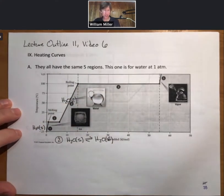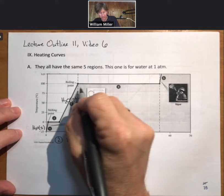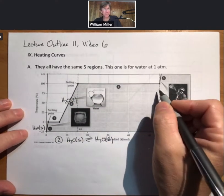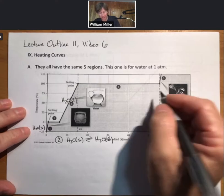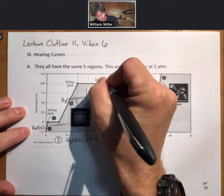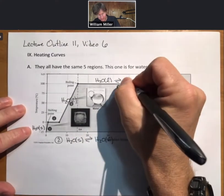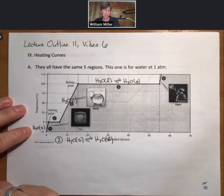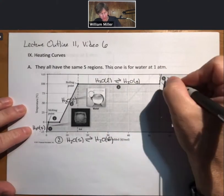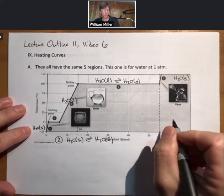Then three here, that's all H2O liquid. Region four takes a lot of energy to overcome all those intermolecular forces between a liquid and a gas phase. This is going to be H2O liquid in equilibrium with H2O gas. It does take a lot of energy. And then up here we have H2O gas, that's region five, that's water vapor.